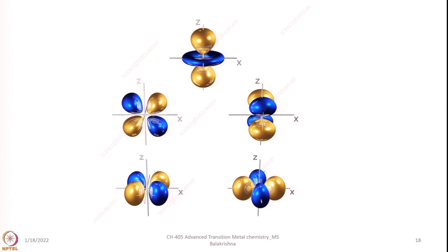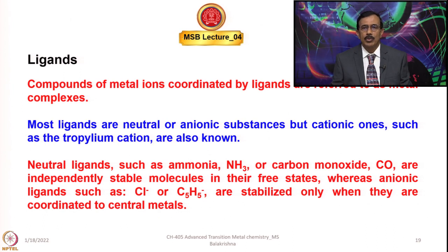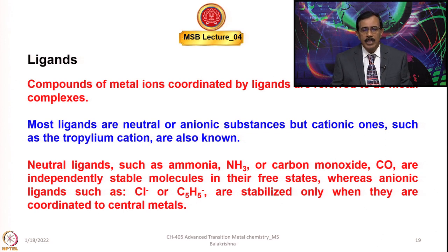D orbitals and their shapes — we have d-z², d-xz, d-yz, d-x²-y², and d-xy. Ligands are very important components of coordination compounds and organometallic compounds. Compounds of metal ions coordinated by ligands are referred to as metal complexes, meaning a complex must have a metal ion or neutral metal coordinated by ligands. Most ligands are neutral or anionic substances — they can be ions, atoms, groups, or molecules — but cationic ones are also known, for example the nitrosyl cation or tropylium cation. Neutral ligands such as ammonia and carbon monoxide are independently stable molecules in their free states.